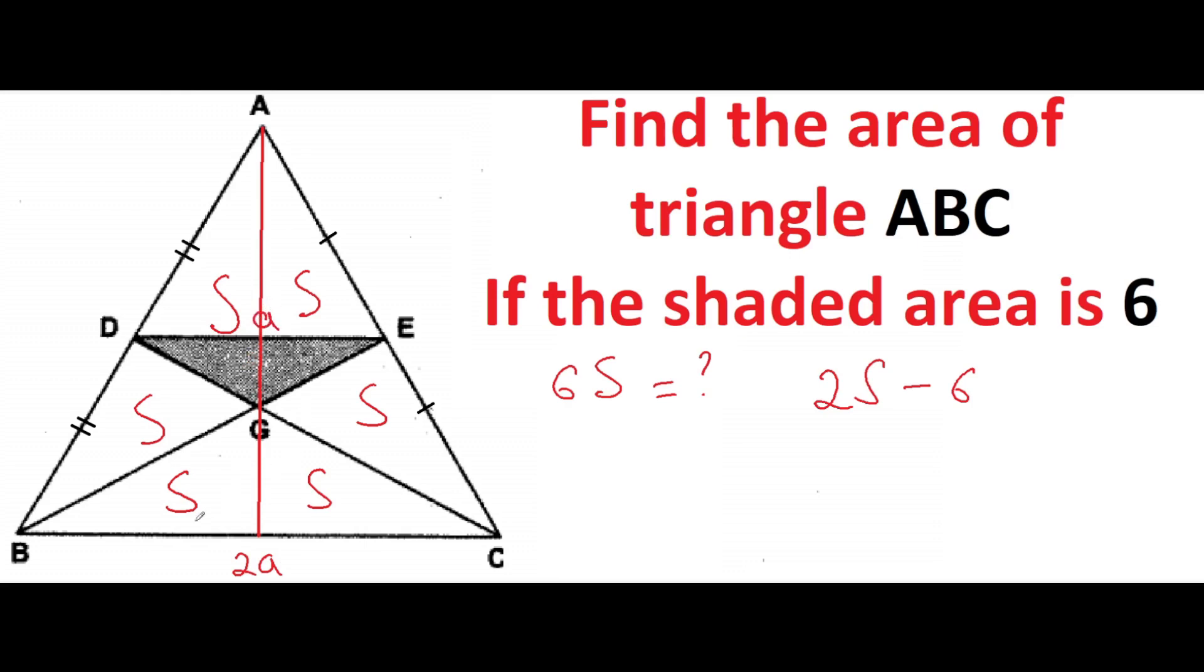We can say that the area of ADE will be four times smaller than the area of ABC. We know that the area of the big triangle is 6S, and if we divide it by 4, we can get the area of ADE.